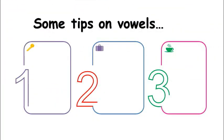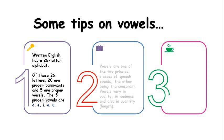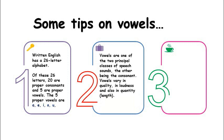All vowels are oral sounds because they are produced through the mouth. So when air moves freely without obstruction from the lungs to the mouth, the vowel sound is created. Here are some tips on vowels. Written English has 26 alphabets. Of these 26 letters, 20 are proper consonants and 5 are proper vowels. Vowels vary in quality, in loudness, and also in quantity.